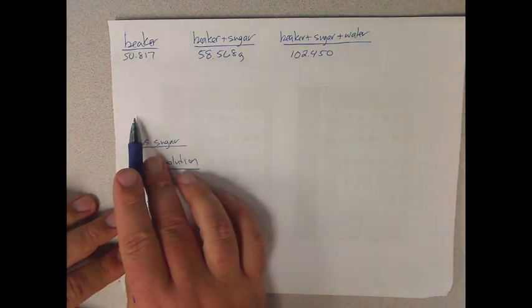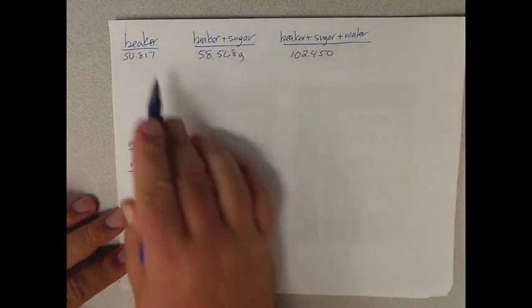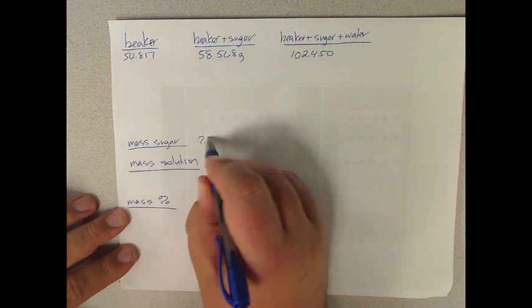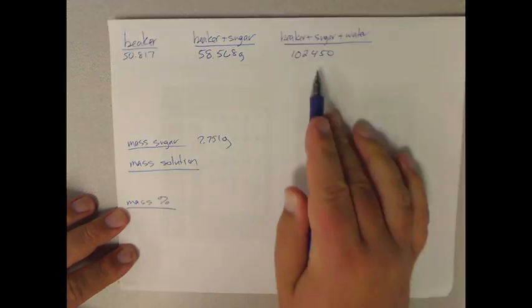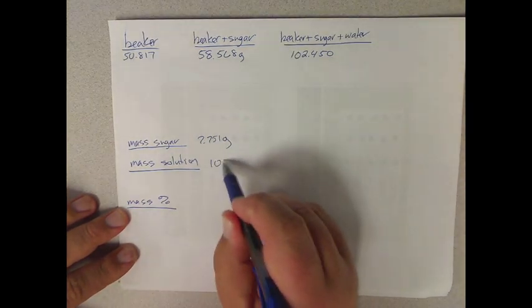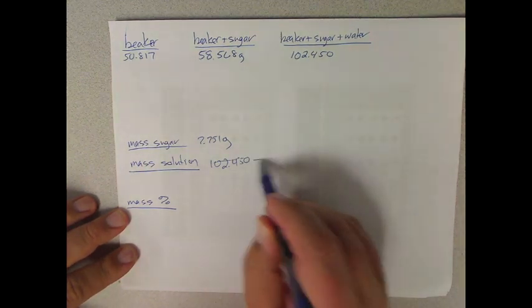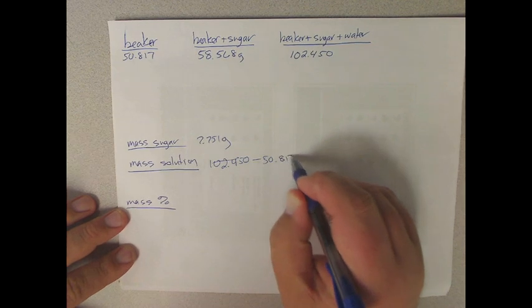This makes it pretty easy, and you'll have five of these numbers. I'm just going to do one. So the mass of sugar, you just subtract the beaker, so in this case it's 7.751 grams. The mass of solution then is 102.450 minus 50.878, 51.572.